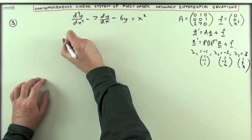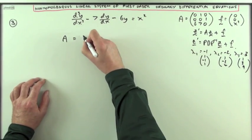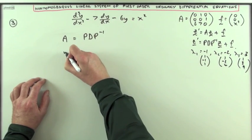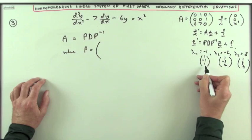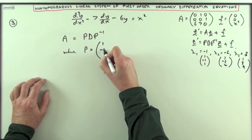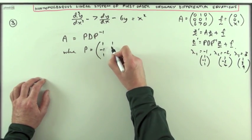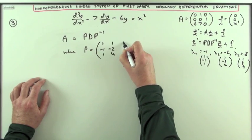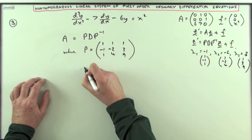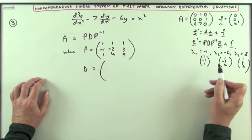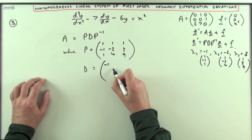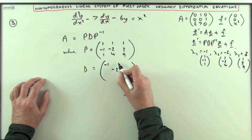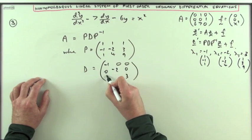Which means the matrix A has now been diagonalized into the form P D P to the negative 1, where P equals 1, negative 1, 1, 1, negative 2, 4, 1, 3, 9. And D equals negative 1, negative 2, 3 as the diagonal matrix: negative 1, negative 2, 3, 0, 0, 0, 0, 0, 0.